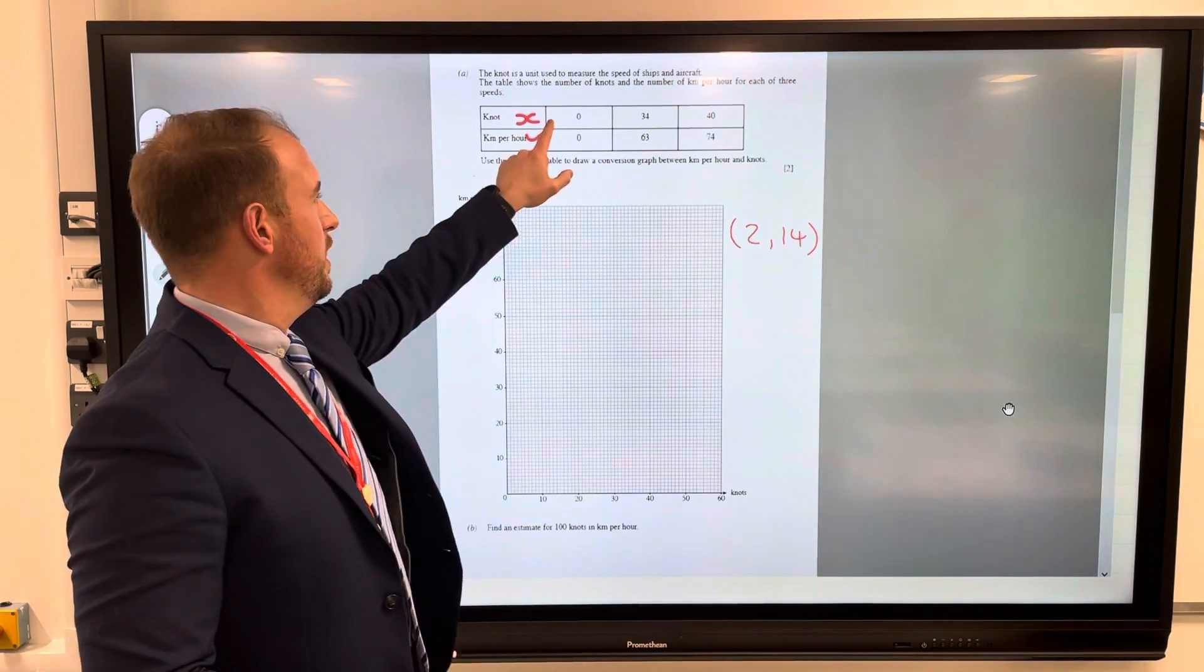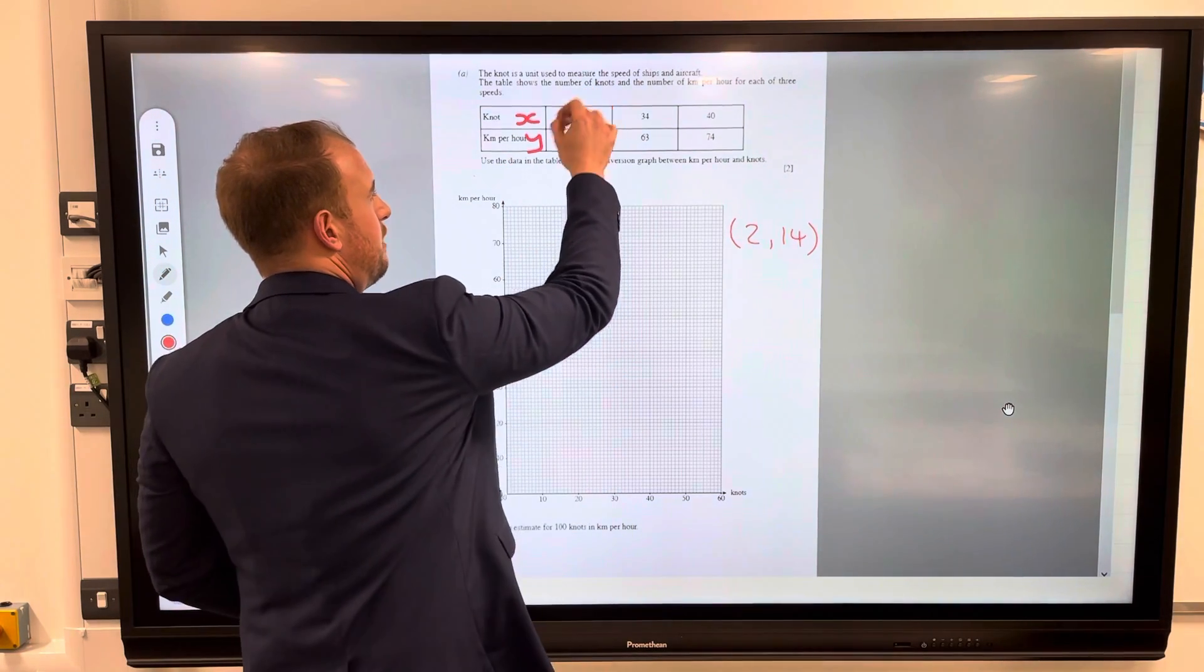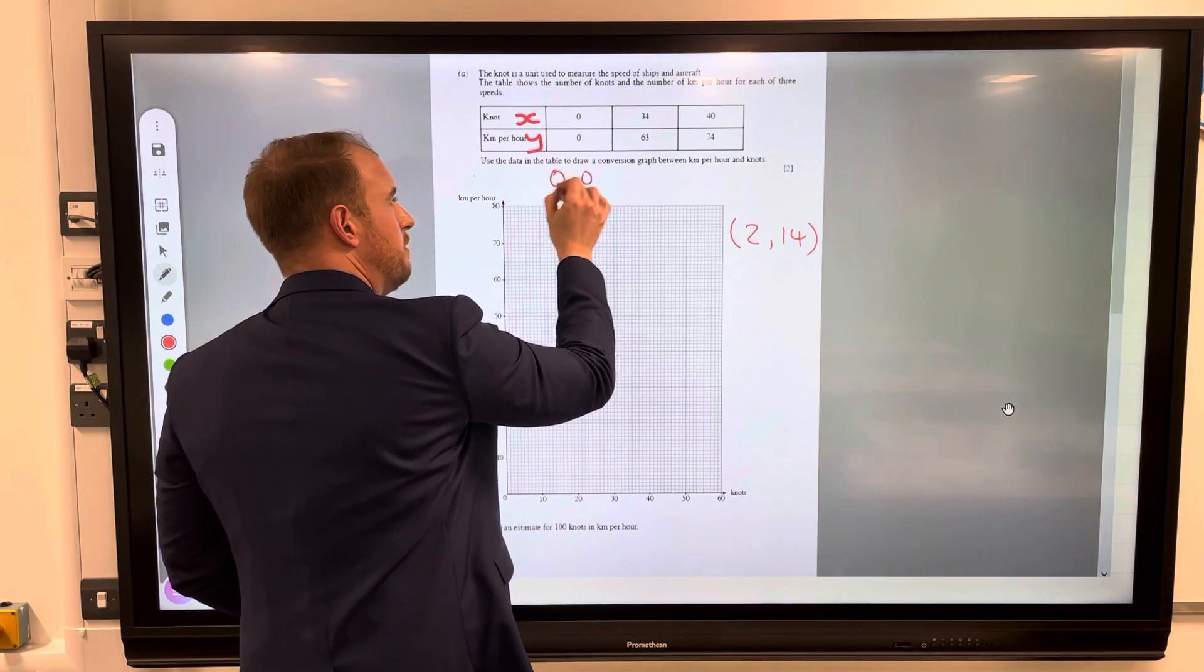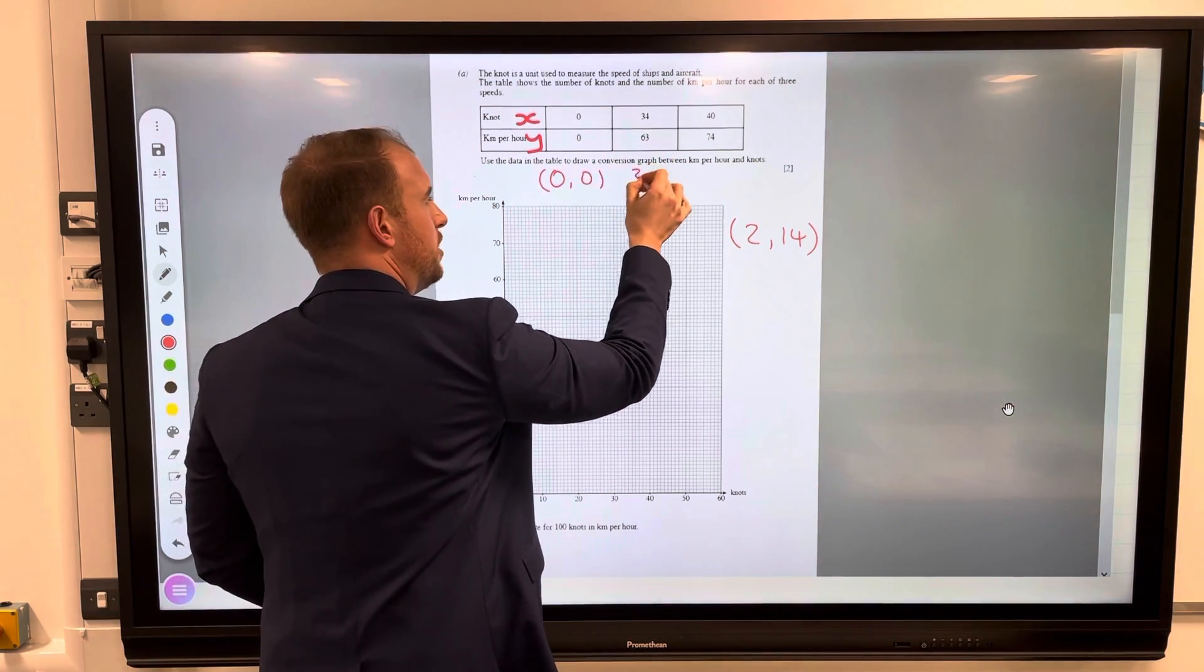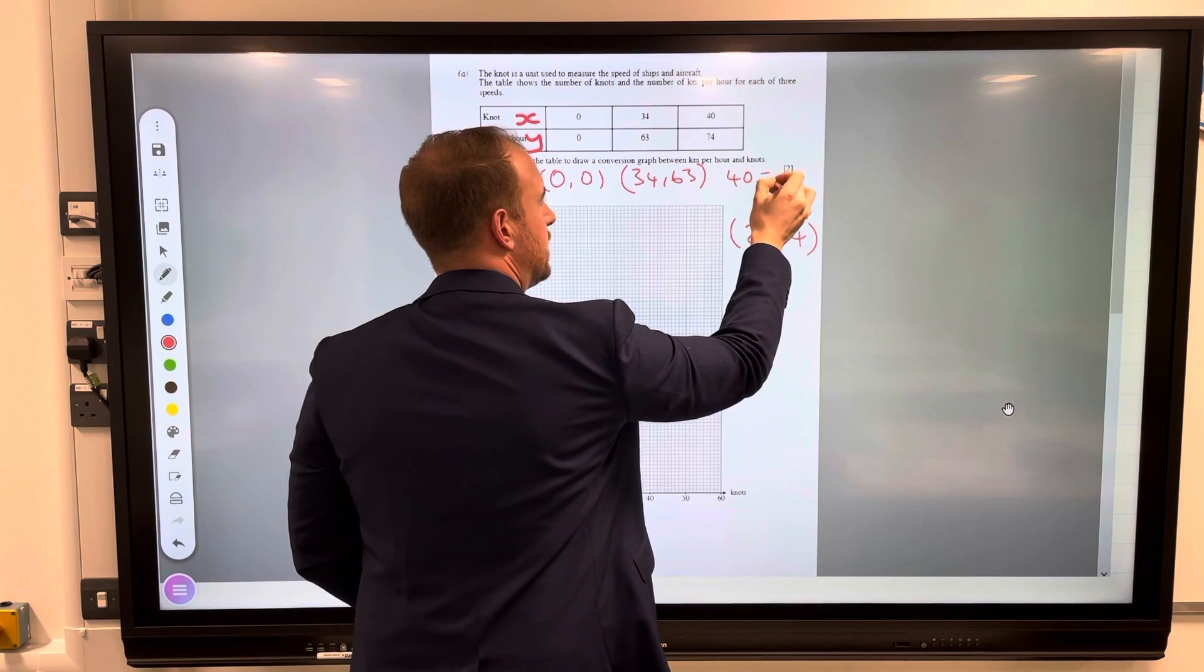Now I know you're used to seeing coordinates looking like that, x and y. However, they've now asked you to plot the points from this table. So there is your coordinate, the first one will be zero zero, second will be 34, 63, and then the next one will be 40, 74.